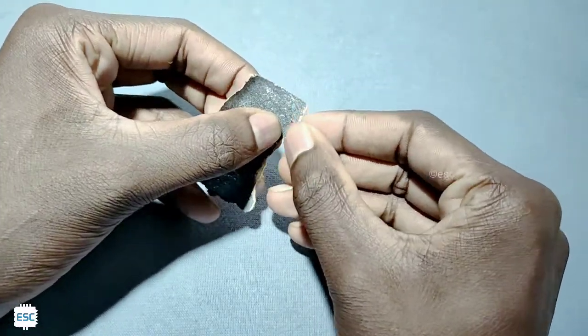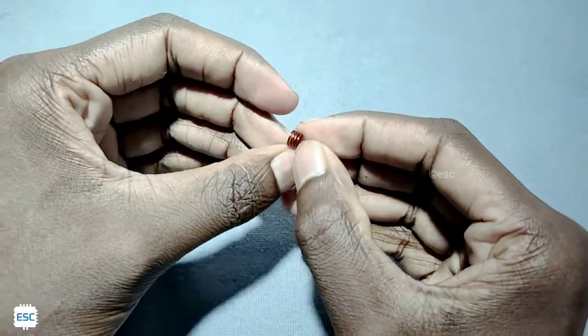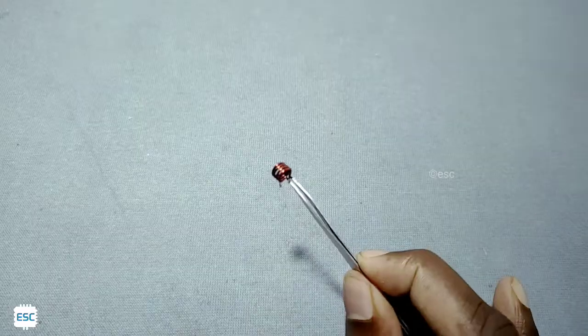Then I removed the insulation from the ends using sandpaper. That's it, our coil is ready.